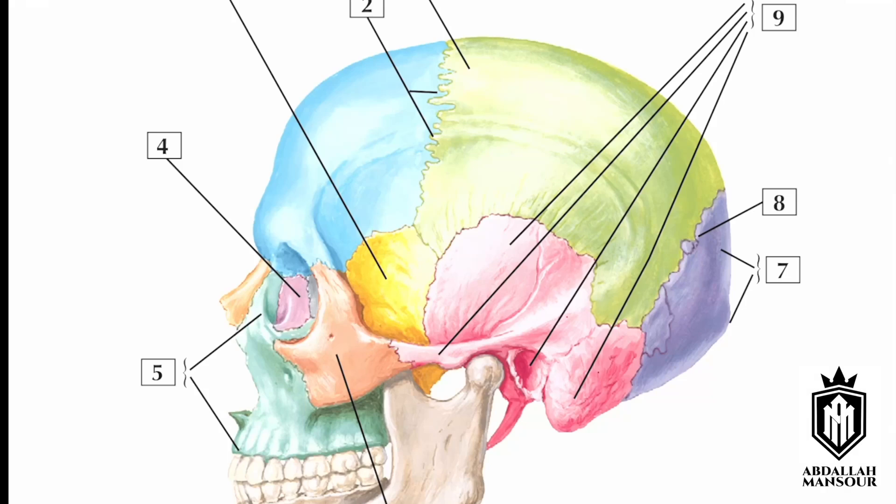In this video I'm going to explain skull anatomy and a few more questions that can come up in the exam. Starting with the skull bones, we have multiple bones forming the skull. They are connected together by an irregular structure called the suture. The first bone from the front is called the frontal bone.